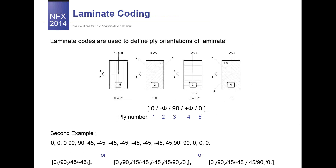The next thing I would like to introduce is laminate coding. We received a lot of questions about how to handle the composite, so this basic introduction to coding is quite important. Laminate codes are used to define the ply orientations of the laminate, and the main purpose is to provide a simple, easily understood method of describing the layup. If we take a look at this picture, we see an example of a laminate with this coding.